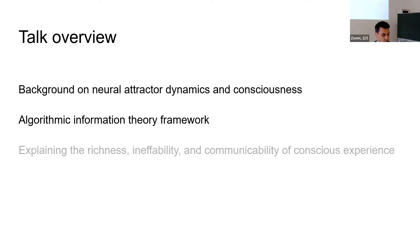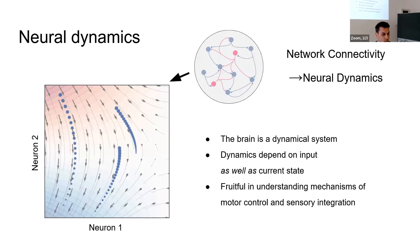The point is that language is actually really good for not describing the position of an attractor, so the actual representation, but it's good for labeling them because there's a shared discrete structure, which I'll talk about. So I first want to start with some background on attractor dynamics and how they're related to consciousness.